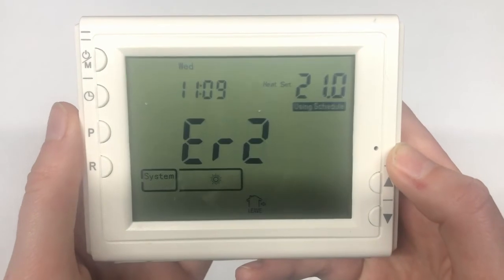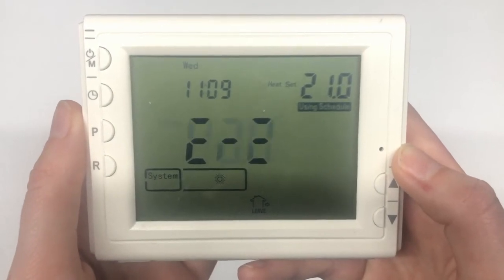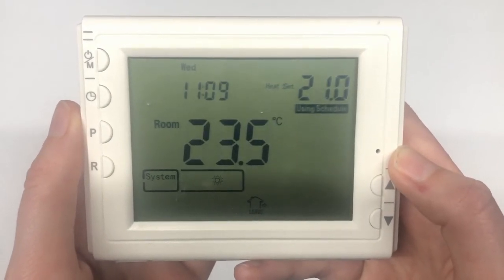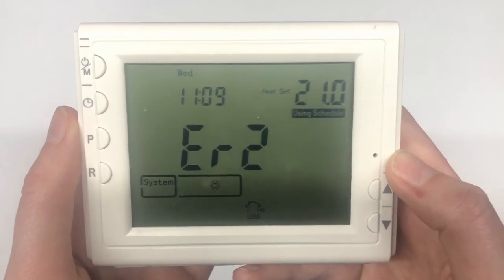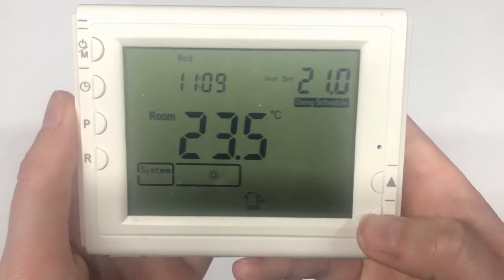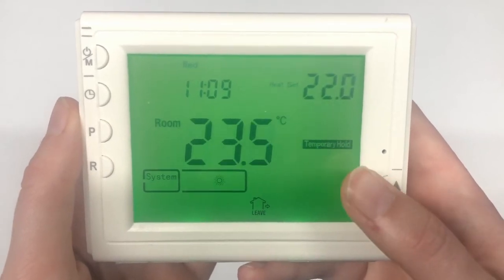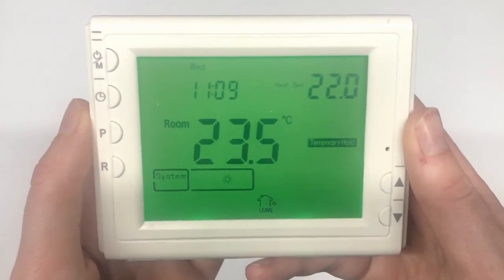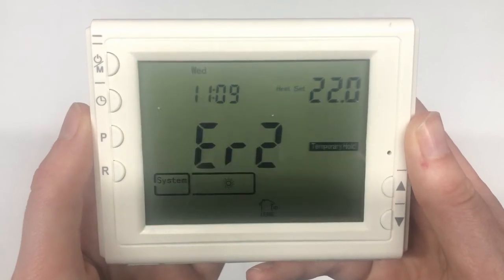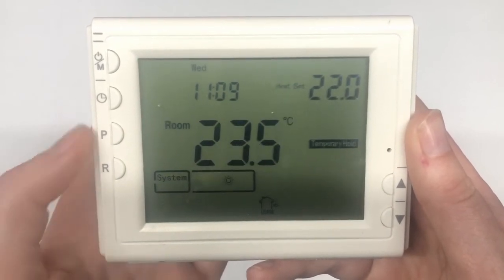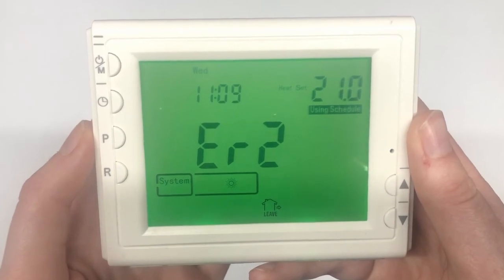To set your controller to a temporary hold, which means you're setting a different temperature until the next scheduled time comes in, just use the up or down arrows to set the temperature. Here, it will be 22 degrees until the next schedule kicks in. Clicking R will return that to the normal schedule.